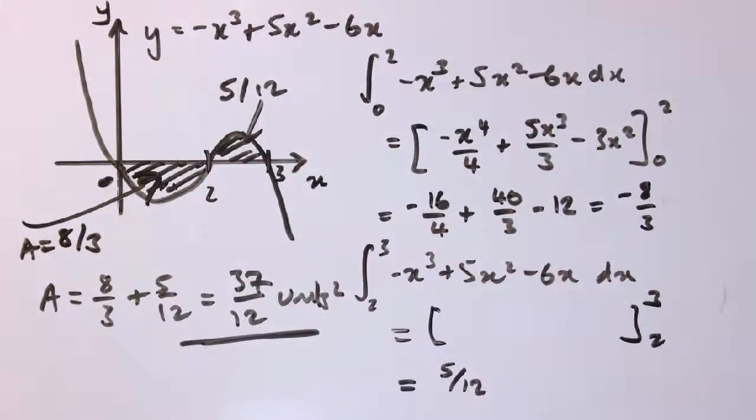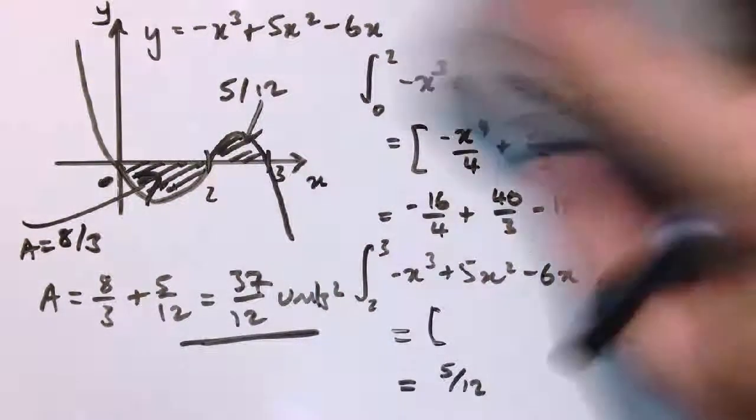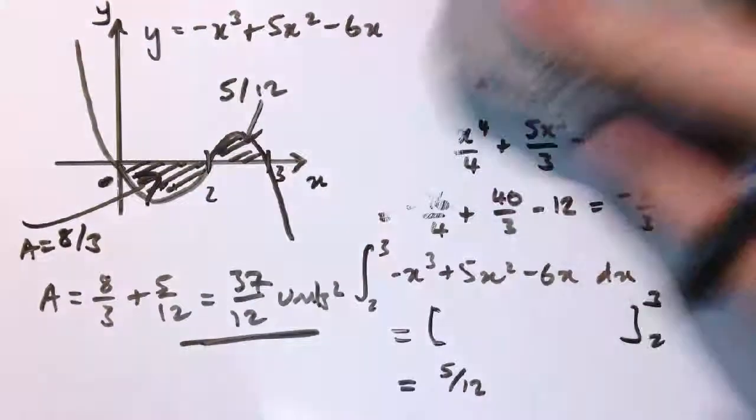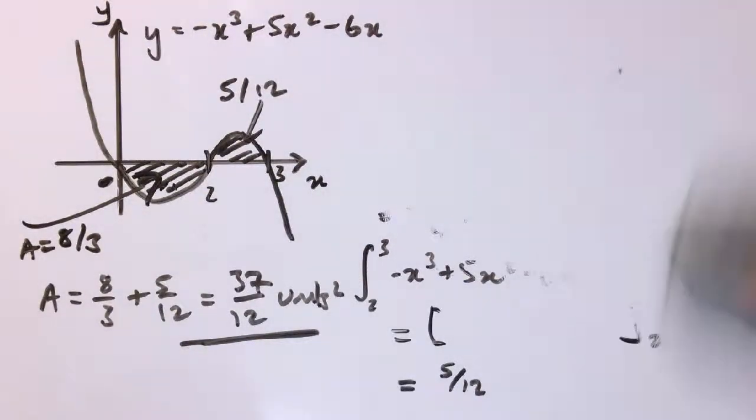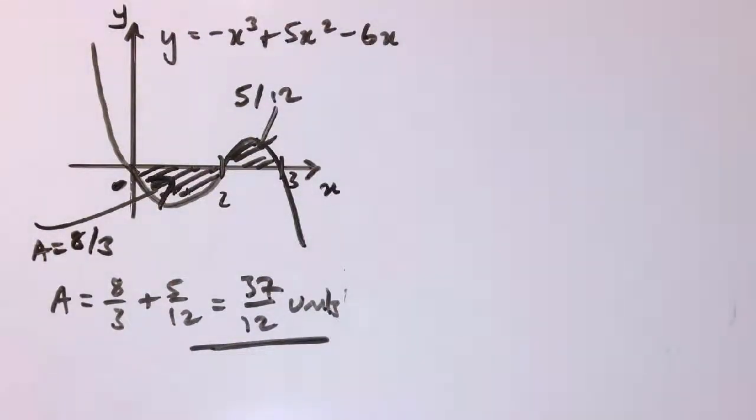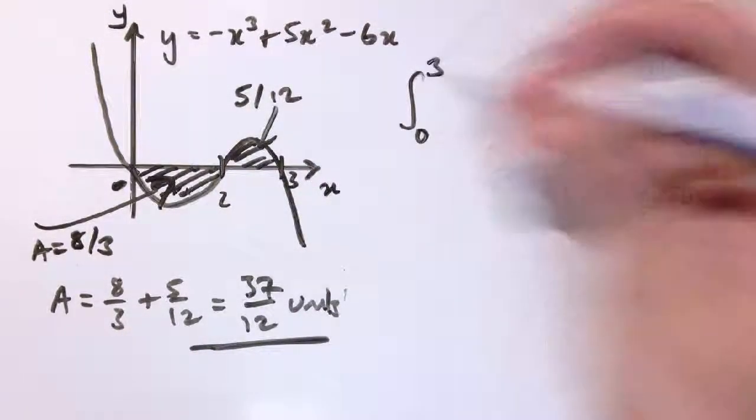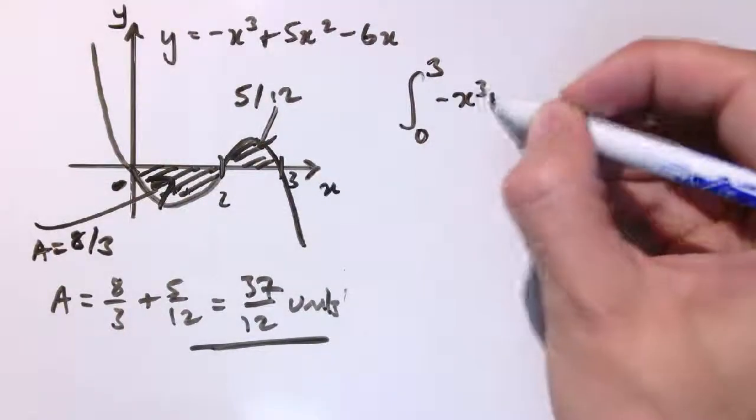What I want to just do is to try and shortcut this method, and we'll see—it will learn something important here about the integral and how it works. Okay, so you might say, well, I want the area between 0 and 3, so why not just do the integral between 0 and 3 of the function and just do it that way?